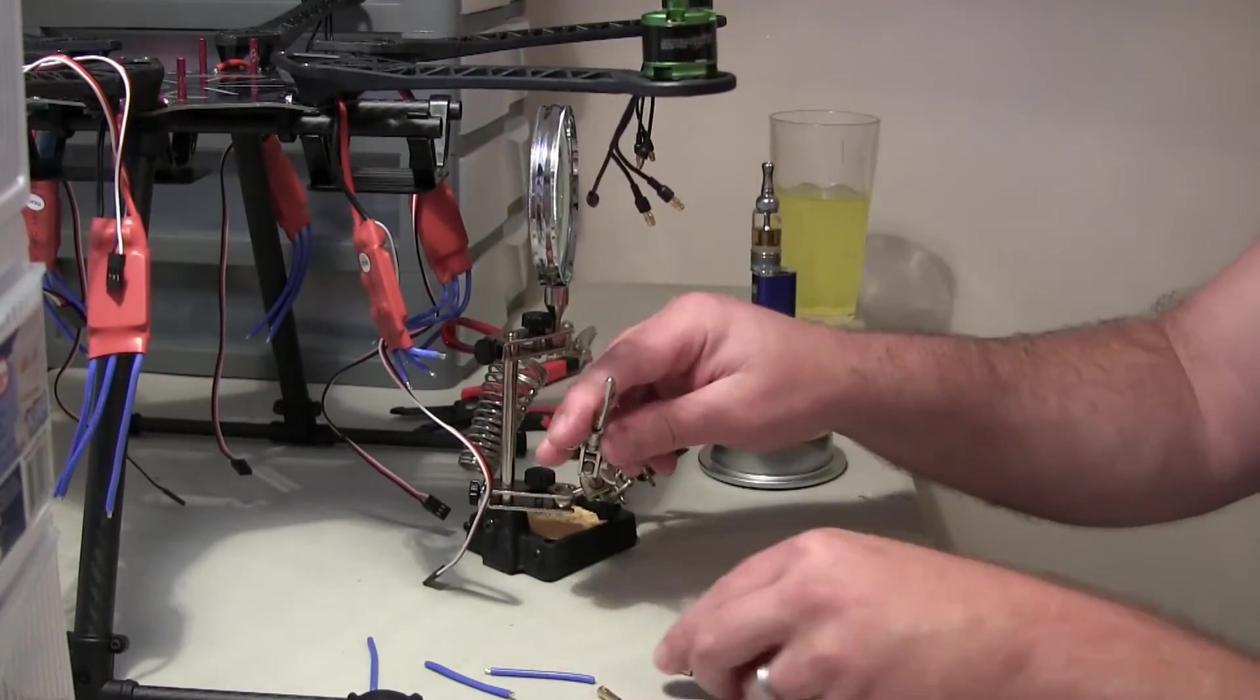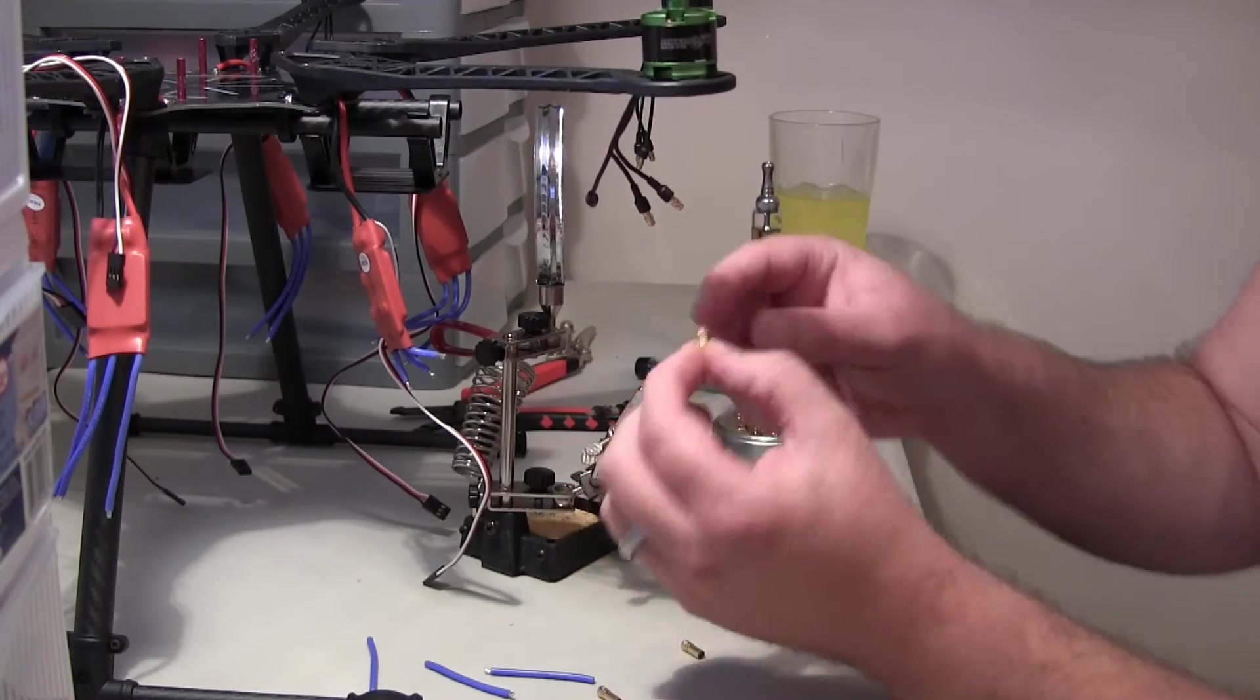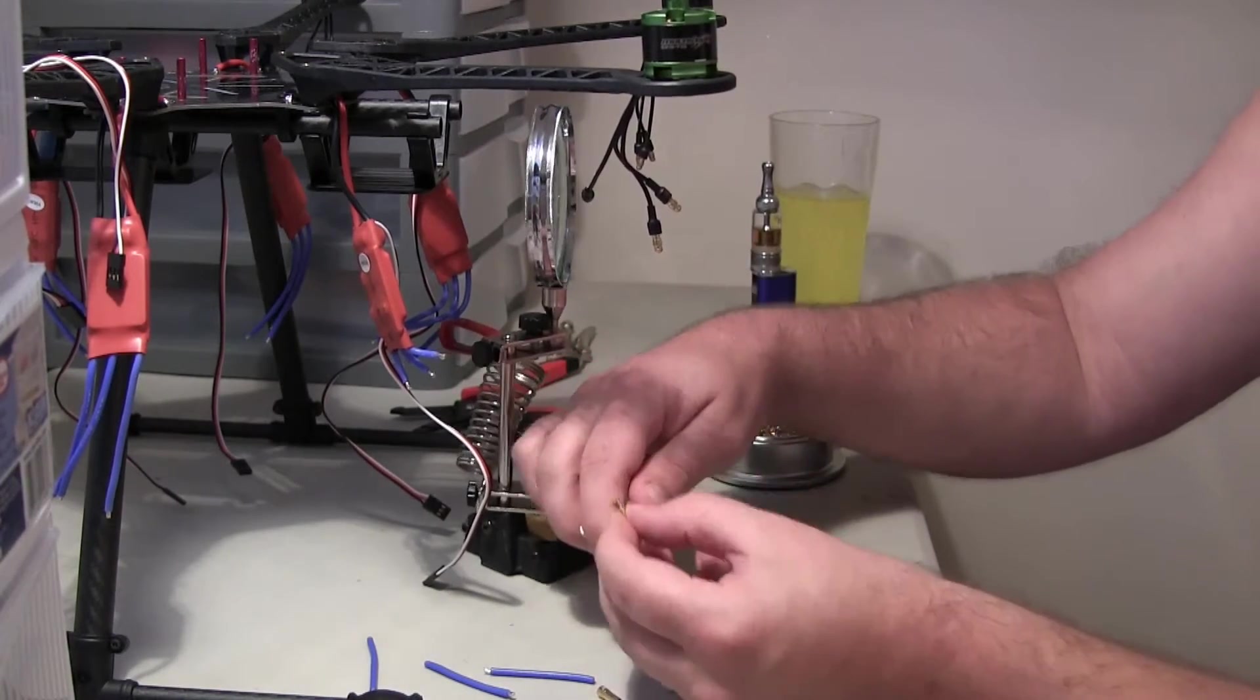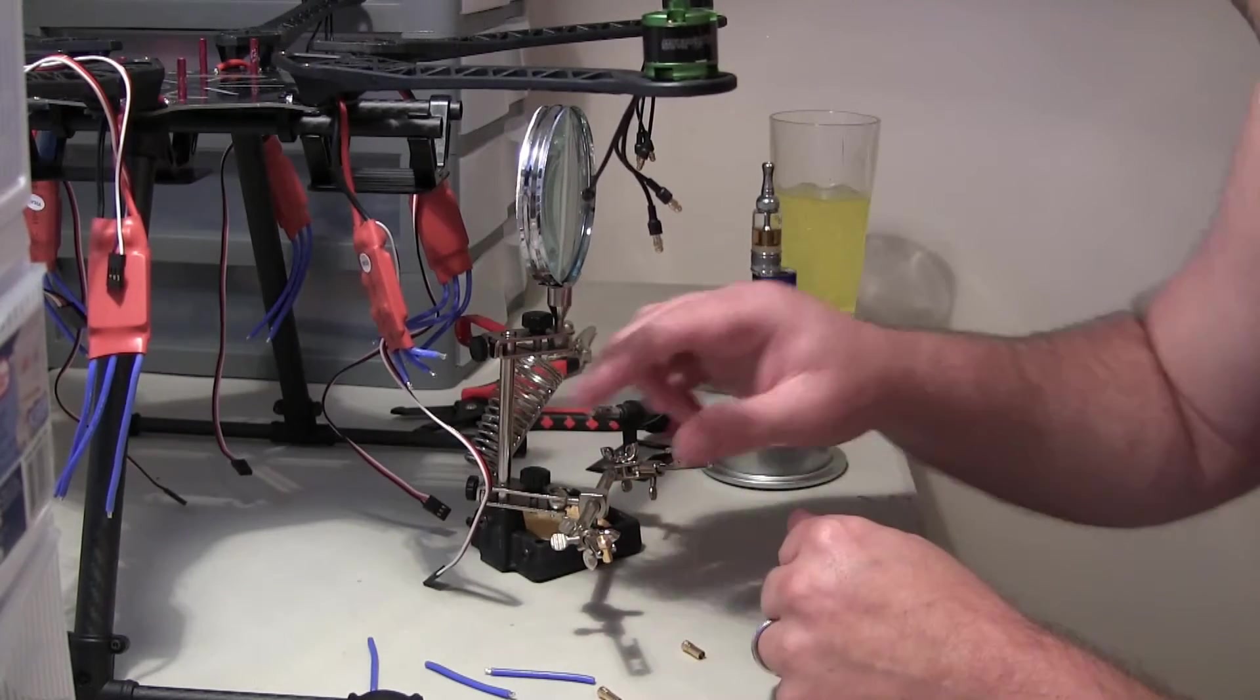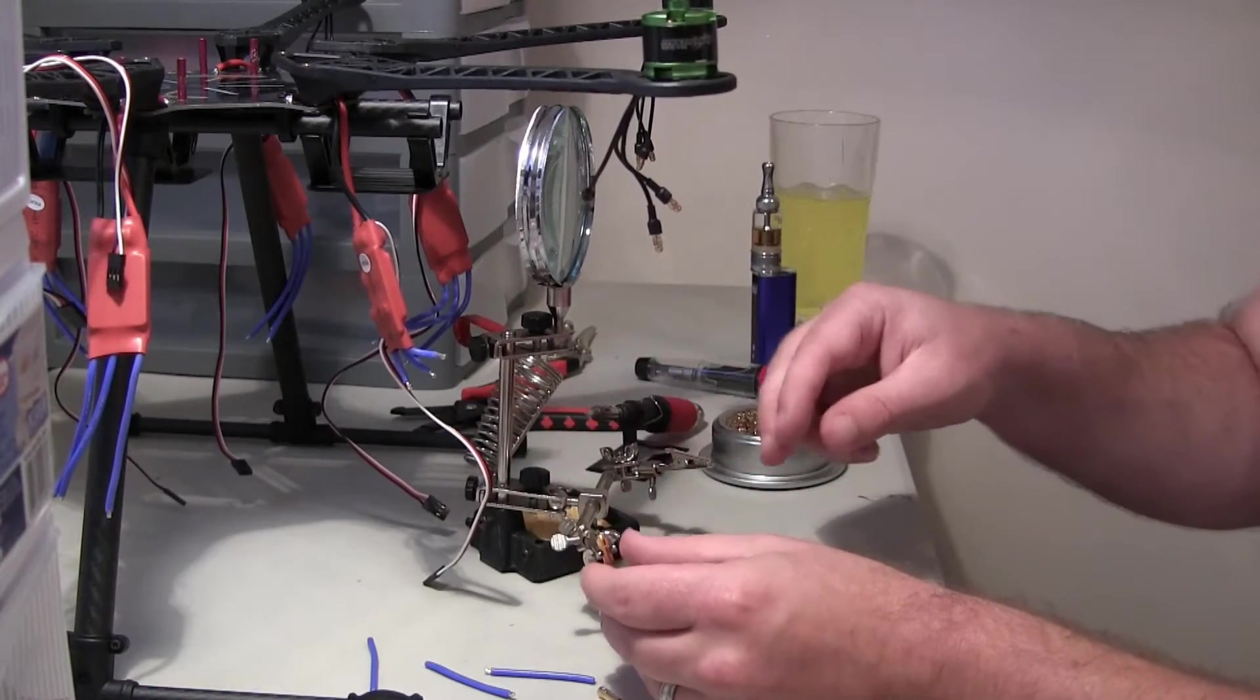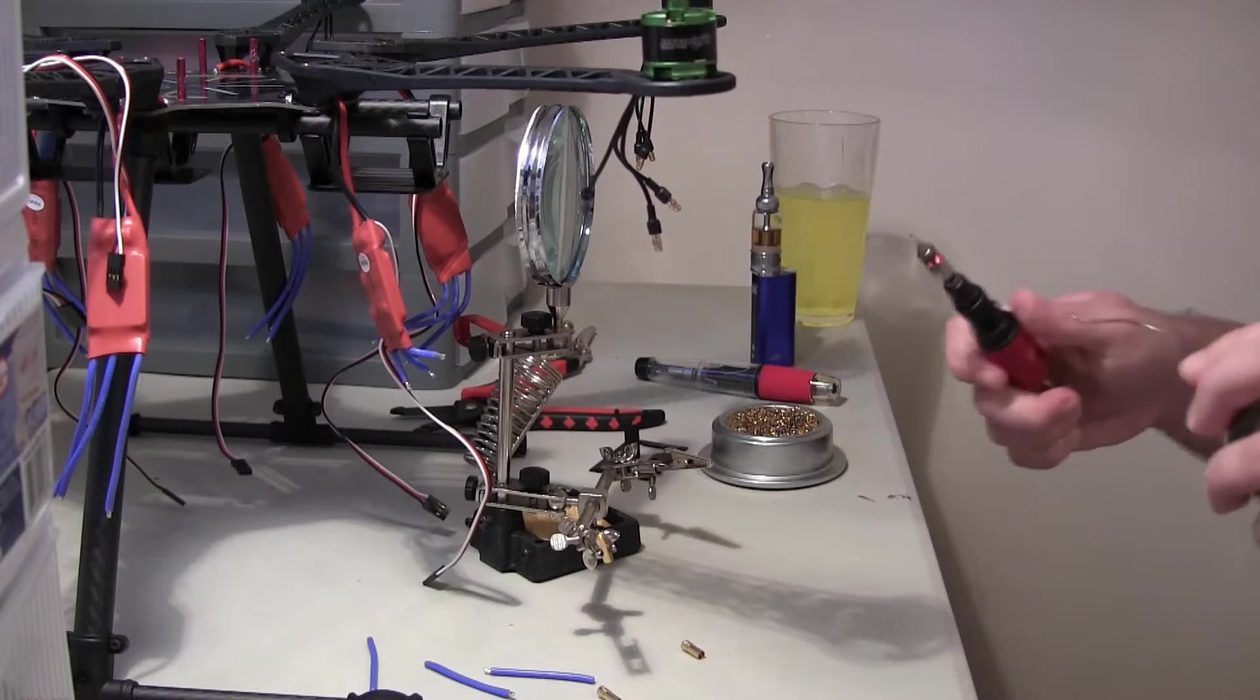The next part we're going to tin the 3.5 millimeter bullet connectors that are going to connect onto the motor. So I'm just going to put it, try to get it in video for you guys. Just put it straight up like this. It's not straight up but close enough.